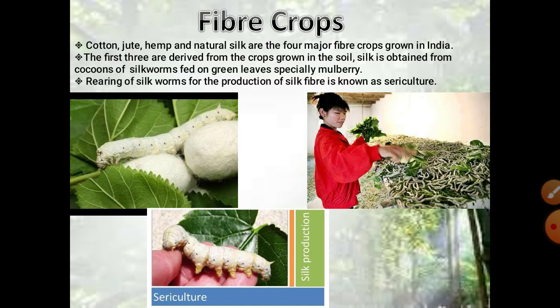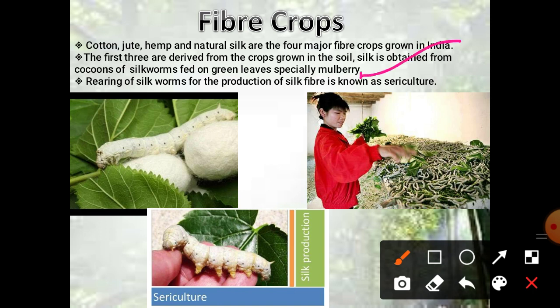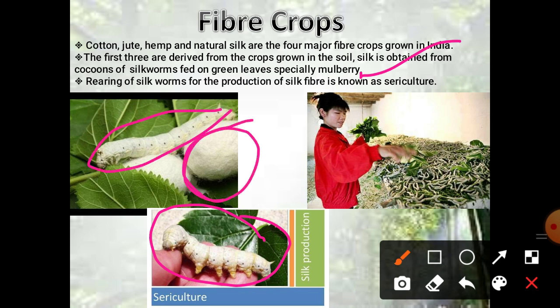Next are fiber crops like jute, cotton, hemp and natural silk — the major fiber crops grown in India. The first three are derived from the crop in the soil, while silk is obtained from cocoons. Silk rearing is called sericulture because it comes from a worm fed on green leaves, especially mulberry leaves. The silkworm forms a cocoon, and from the cocoon we get the silk fiber. Rearing of silkworms for the production of silk fiber is known as sericulture, just as horticulture refers to the production of fruits and vegetables.